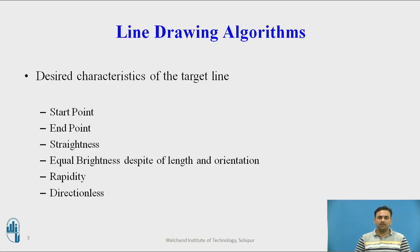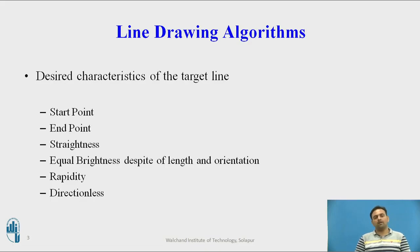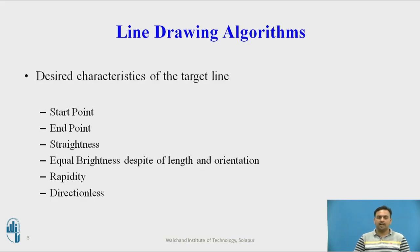Let us start with the line drawing algorithm. First of all, we will discuss about the necessary properties of the target drawing line. One of the first points is the starting point — how we can specify the point that is the initial point of the target line. That is by the coordinates: X and Y coordinates of the start point will indicate the starting point on the line, and same for the end point also.